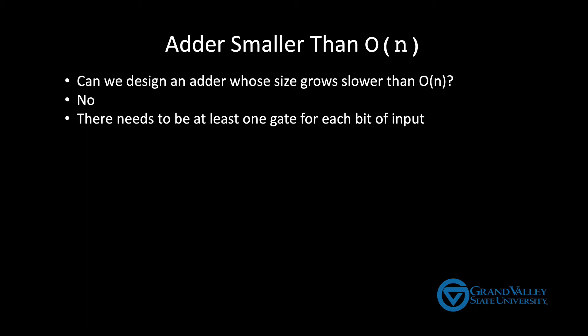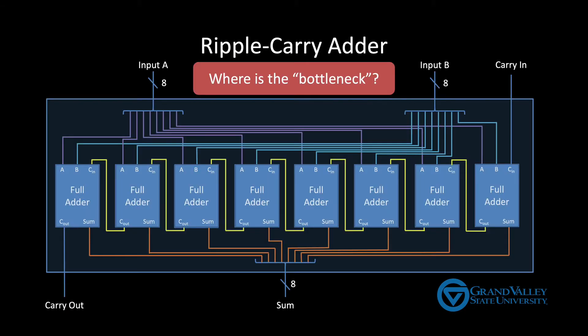Fortunately the problem of reducing the propagation delay is a little more interesting. To see how we can improve the speed we begin by asking where's the bottleneck? Or in other words what's the key aspect of this design that makes the time linear? It's the chain of carries.